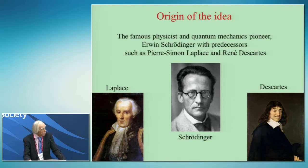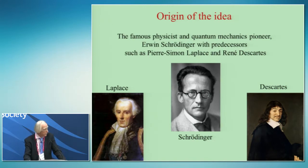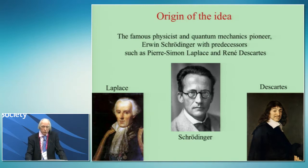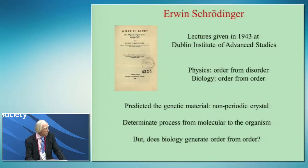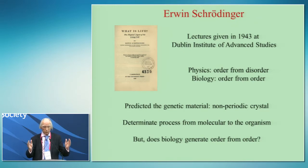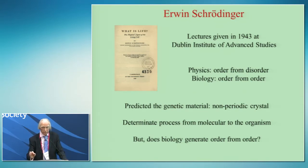How did we get into this problem? It arose — you can trace it all the way back to René Descartes in his treatise on the fetus, way back in 1665, published after his death. You can trace it through Laplace, through to Schrödinger. Schrödinger's classic book, What is Life?, published in 1943, lays out the idea that whereas physics is order from disorder — you have the stochasticity of gas molecules at the molecular level, but in a container, provided there is a constraint, you have ordered thermodynamic laws at the higher level. So he said, physics is the generation of order from disorder.